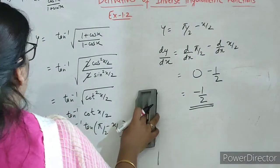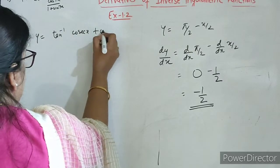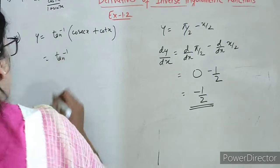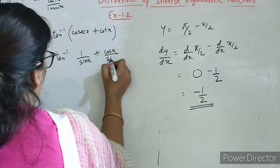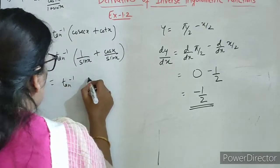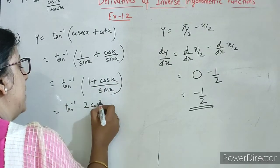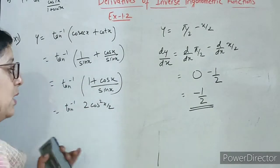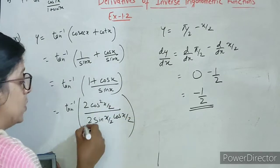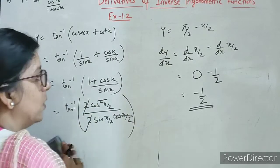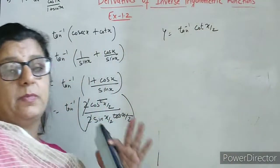Now the 11th part: y equals to tan inverse of cosec x plus cot x. Students, cosec x we can write as 1 upon sin and cot we can write as cos upon sin. So this will be equals to 1 plus cos upon sin x. Use the formula: 1 plus cos x ka formula 2 cos square x by 2, sin x ka formula 2 sin x by 2 cos x by 2. So yhe 2 and 2 cancel, cos se 1 cos cancel. So y equals to tan inverse of cot x by 2.